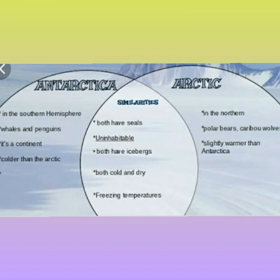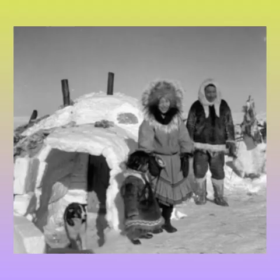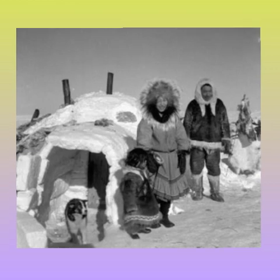Robert Edwin Peary reached the North Pole in 1909. The people of the Arctic region are called Inuit. There are no trees, so the Inuit build their houses out of blocks of snow. These houses are called igloos.